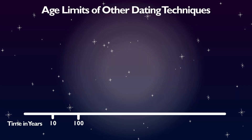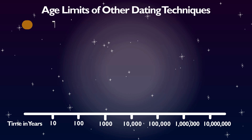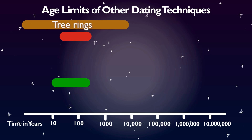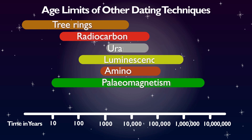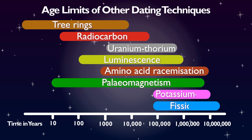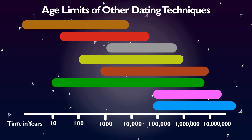Radiocarbon can be used to date organic material up to 50,000 years old. Material older than this has too little carbon-14 left to measure. Other methods that don't rely on carbon need to be used to date very old material.